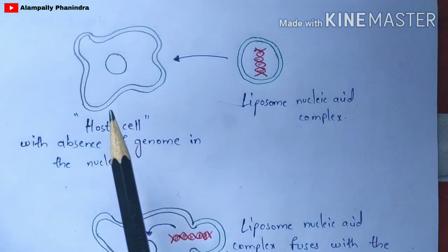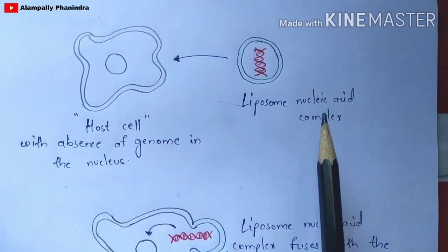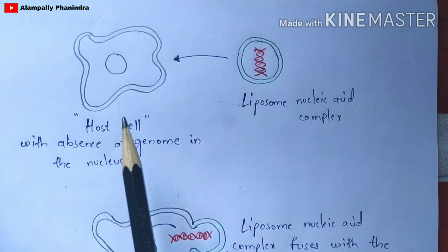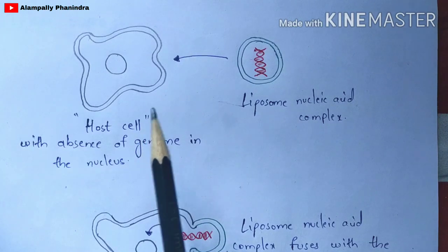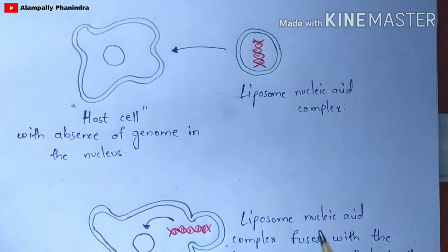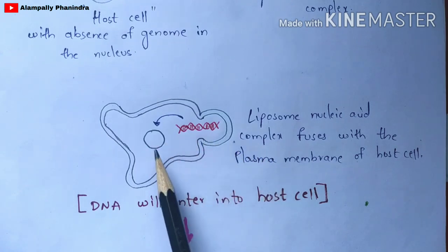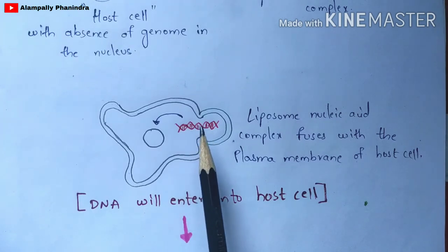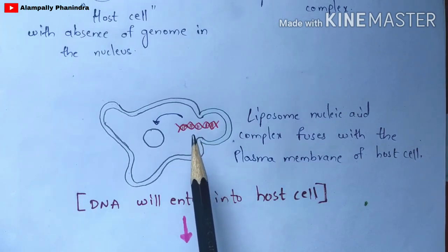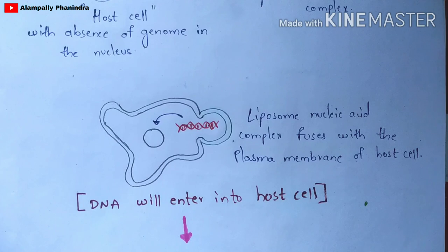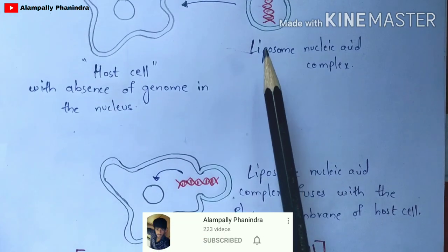In the next step, we take a host cell and place the liposome-nucleic acid complex and the host cell together in a single culture plate. The liposome-nucleic acid complex will then move towards the host cell, fuse with it, and once fused, the cell membrane will get ruptured and opened.